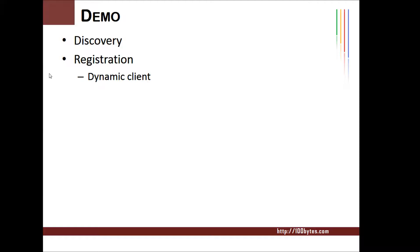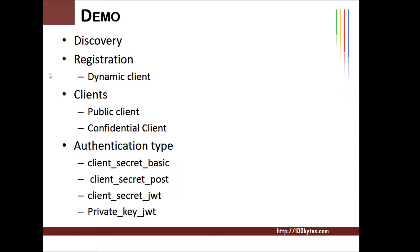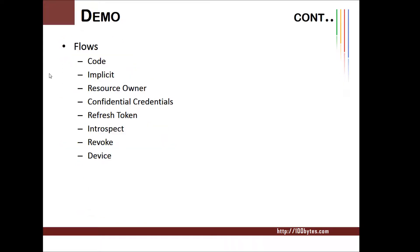The next slides list the demos I'm going to show in this series to explain these concepts: discovery, registration, dynamic client registration, public and confidential clients, all four authentication types (client secret basic, client secret post, client secret JWT, private key JWT), and flows including authorization code, implicit, resource owner, client credentials, refresh token flow, introspection, revocation, and if possible, the device token flow.